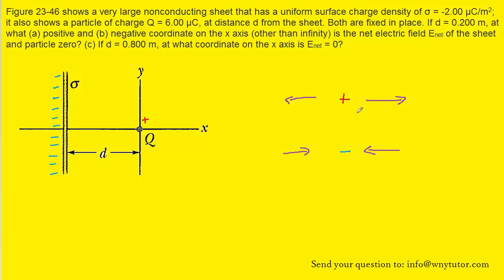With those ideas in mind, let's consider the three regions in this picture. We have the region that lies to the left of the sheet, the region that's between the sheet and the particle, and then the region that lies to the right of the particle.